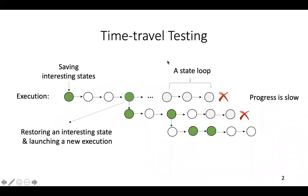So let me introduce the idea first. The time travel testing idea is like this: the execution is started by a testing tool. We observe each visited state and save states that are interesting — specifically, states that have potential to trigger new program behavior, for instance, a state that has never been visited before.